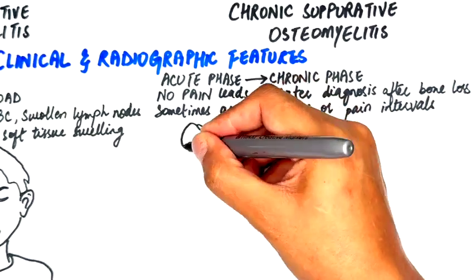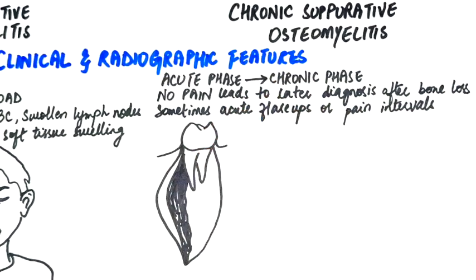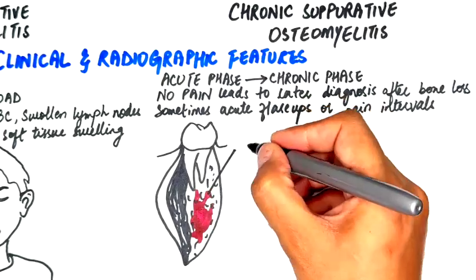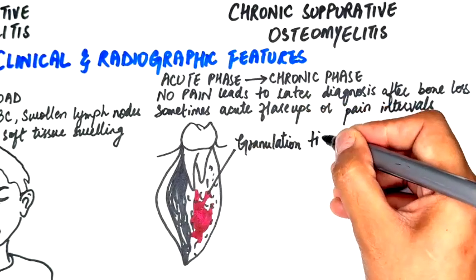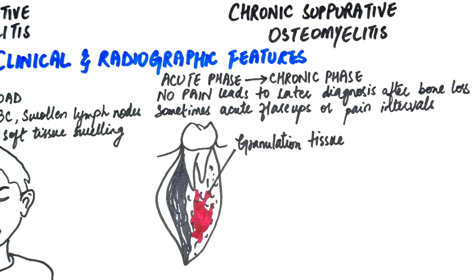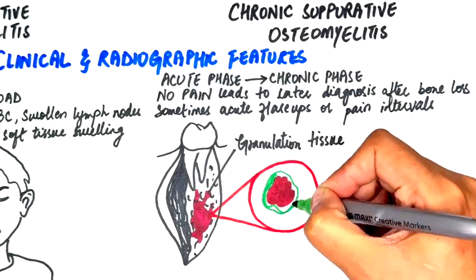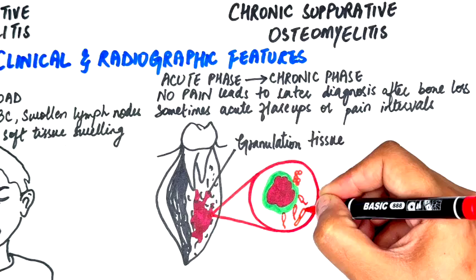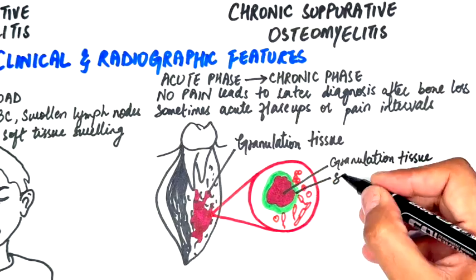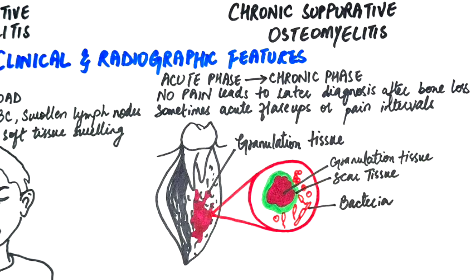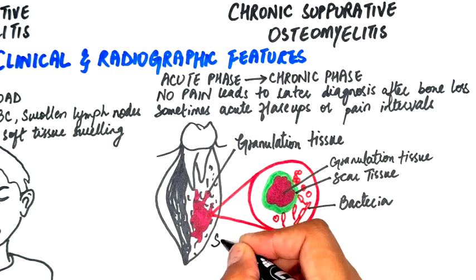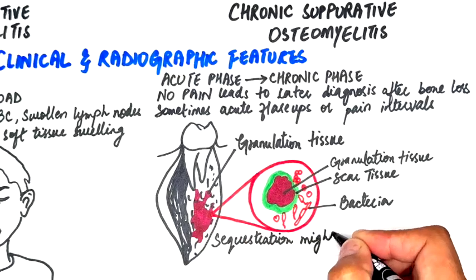In chronic suppurative osteomyelitis, the body's defense mechanisms in response to the long-standing infection create granulation tissue within the bone, which then develops into scar tissue as it tries to isolate the infected area from the surrounding bone, effectively serving as a breeding ground for bacteria. Due to the unique blood supply of the jaw bones, which rely on a few main arterial loops, damage to the primary vessel can lead to the deaths of large sections of bone, which may cause sequestration of an entire quadrant of the jaw.